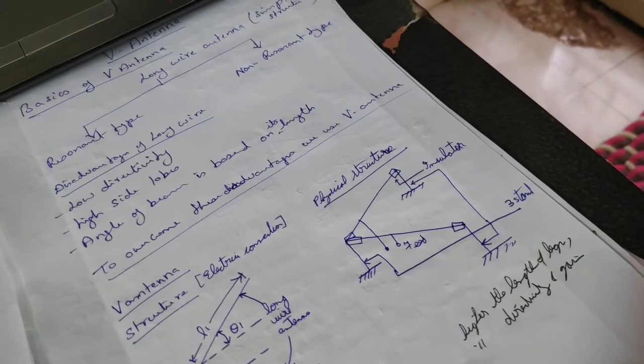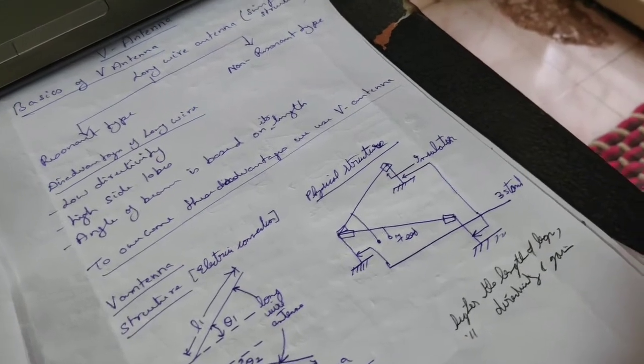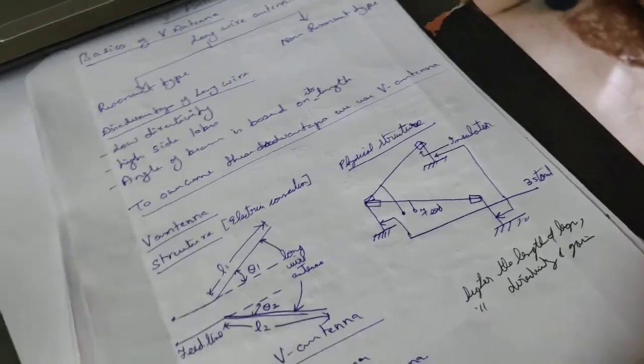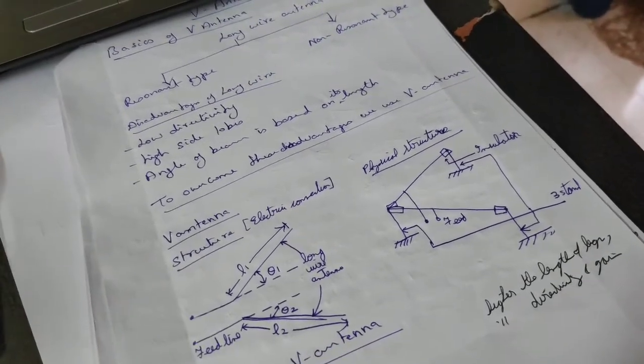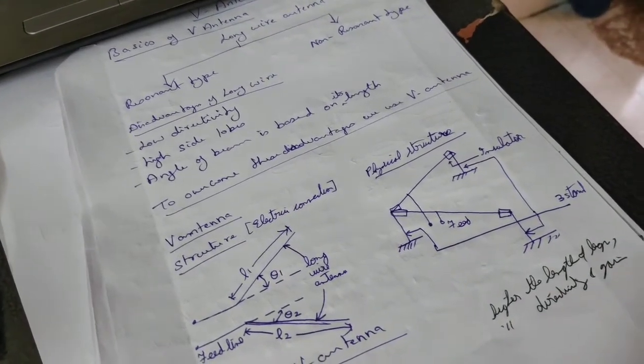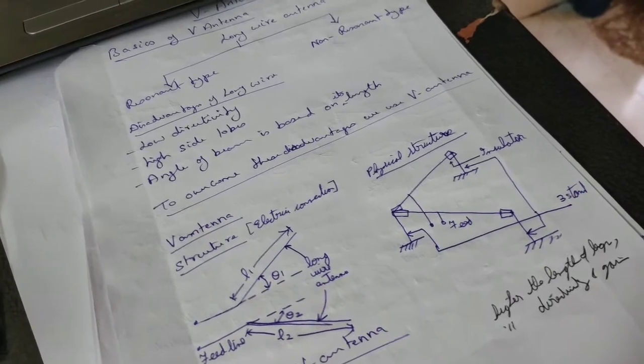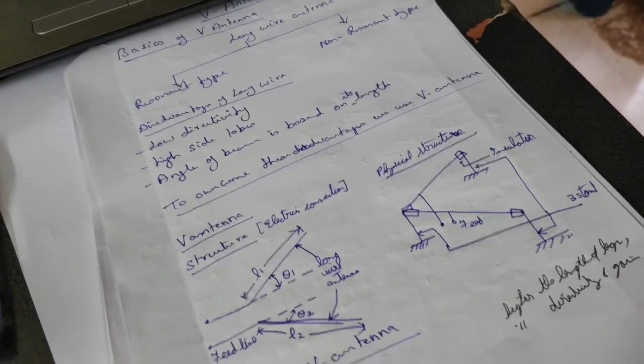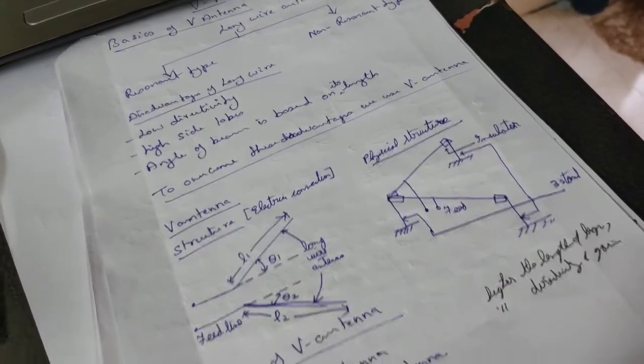And its angle of beam is based on its length. So we had these three disadvantages, and in order to overcome them, we use the V antenna.